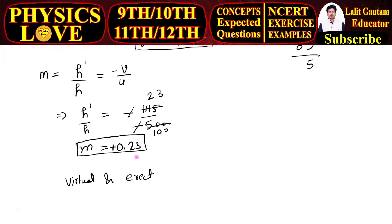And the size of the image will be smaller. Reason: because it is 0.23. So what does it represent? It represents that h dash upon h is equal to m, h dash upon h is equal to 0.23, and h dash, height of the image, is 0.23 times the height of object. So decimal value means the size of the image is going to be decreased. Virtual and erect, and size of image will be smaller.